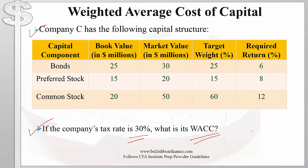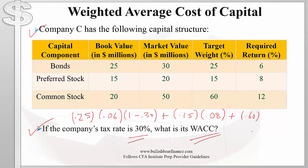Since we are provided the target weights, we simply use this information in our WACC computation. The target weight for bonds is 25 percent times the required return on bonds — don't forget to adjust for taxes — plus the weight on preferred shares times the required return on preferred shares, plus the weight of common shares times the required return on common shares. We get a WACC of 9.45 percent.